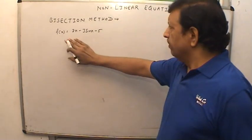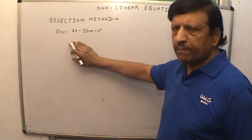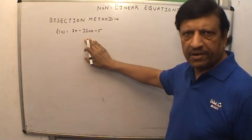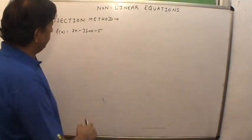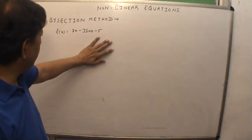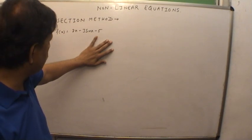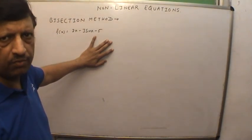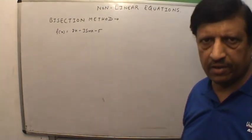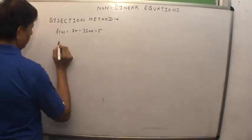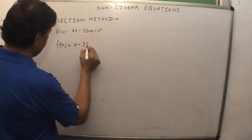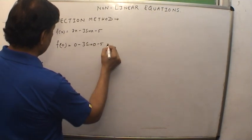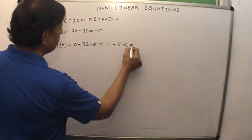This equation is a combination of algebraic and trigonometric functions. The question is: from where do we start finding the value of x? To estimate a starting point, we use a hit-and-trial method. We start by evaluating f(0), which gives 0 minus 3·sin(0) minus 5, equal to minus 5, which is less than 0.